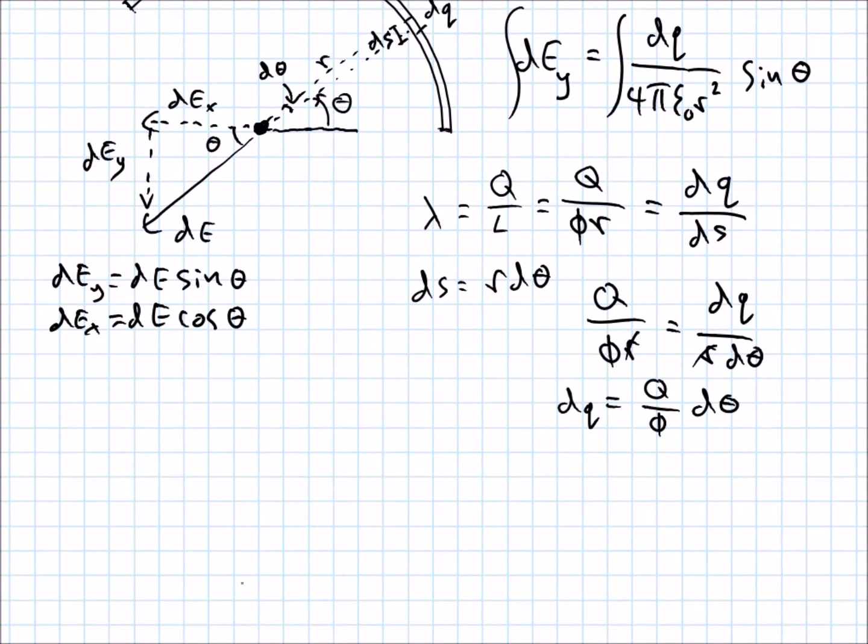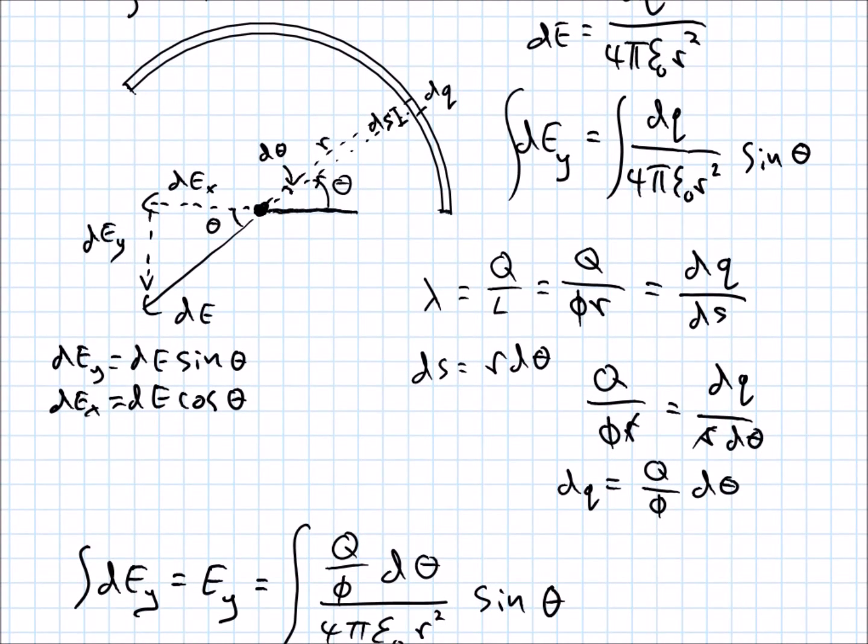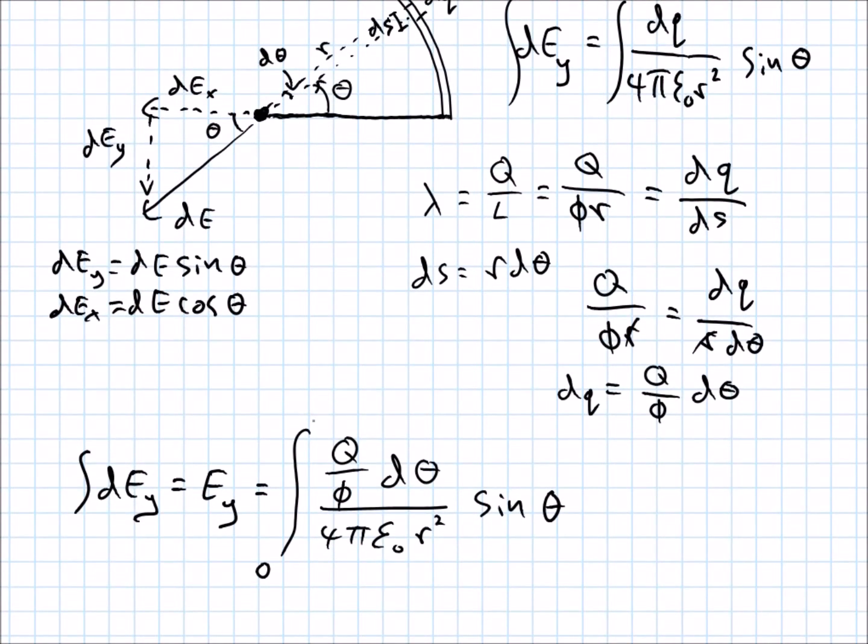Alright, so this, let's see over here. The integral of DEY, that's just EY, right? This is what we're looking for, is equal to integral of Q over phi Dtheta over 4 pi epsilon naught R squared times the sine of theta. Alright, and we're integrating from an angle of zero, right? Right here, this line, that's our angle of zero, all the way over to an angle of phi, like I mentioned. But I'm just trying to keep my drawing from being too messy. So, from zero to phi.